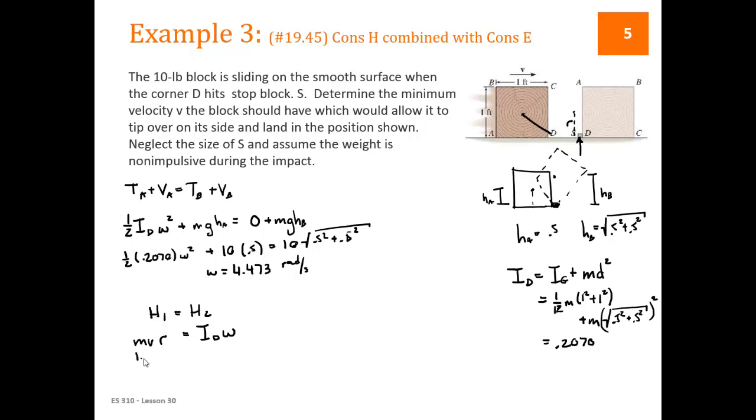H1, the block is moving with a velocity, so to get an angular momentum based on a linear velocity, we take the linear momentum times R. In this case R is the distance, the center would be right above S, so this is R, so it's 0.5. So we get mass, which is 10 over 32.2, times the unknown V, times 0.5 equals 0.2070, which is ID, times 4.473, which is omega. So for V, we get 5.96 feet per second as the minimum velocity that this block could have to be moving at in order for it to flip over.